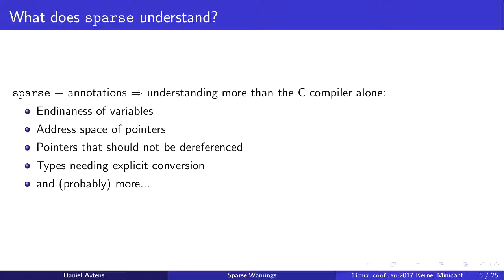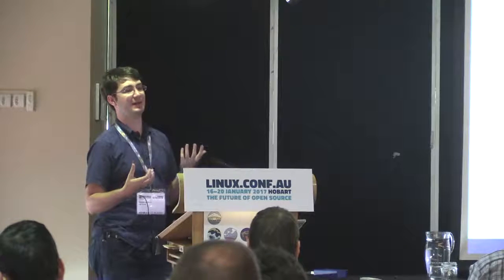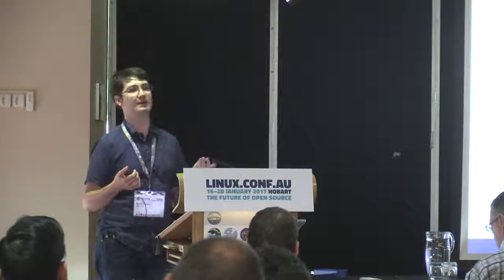The real power of SPARS comes with type annotations, because with type annotations SPARS is able to figure out more things than the C compiler can figure out by itself. We can tell SPARS about the endianness of variables — is something coming out of your hardware a big-endian number? We can tag it as big-endian. Is it little-endian? We can tag it as little-endian. And SPARS can help us keep track of what's big-endian, little-endian, and CPU-endian, and hopefully stop us from trampling over ourselves.